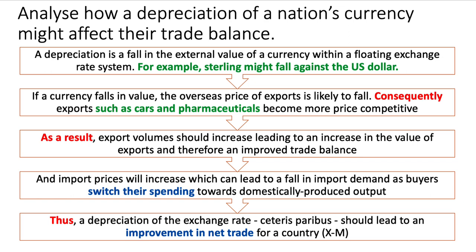Then we build our analysis. If a currency falls in value, the overseas price of exports is likely to fall. Consequently — a nice connective word — exports, such as cars and pharmaceuticals, become more price competitive in the overseas market. As a result — another nice connective phrase — export volume should increase, leading to an increase in the value of exports, and therefore an improved trade balance. So we're using these connective words all the time.